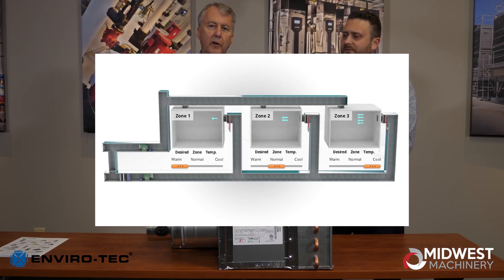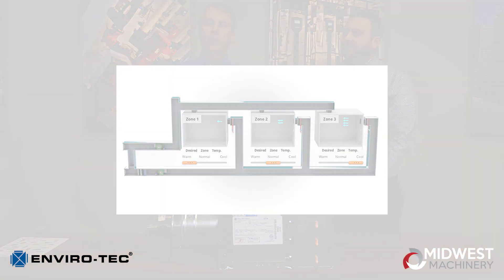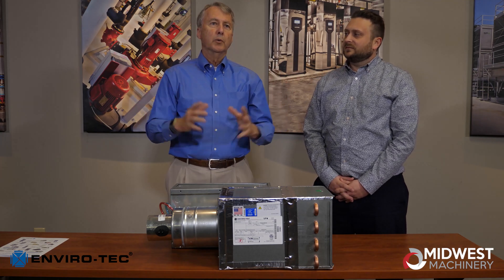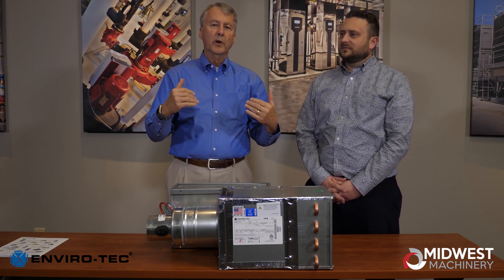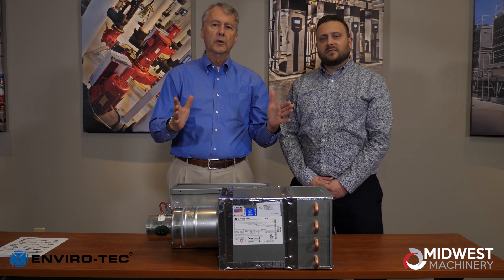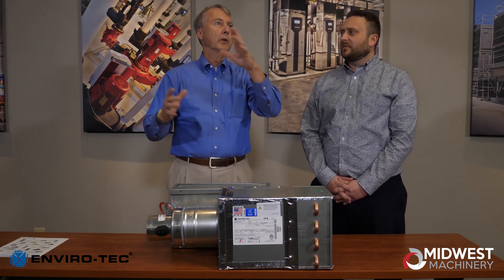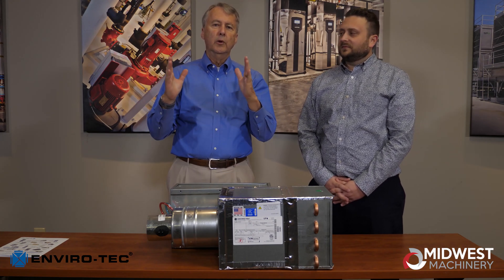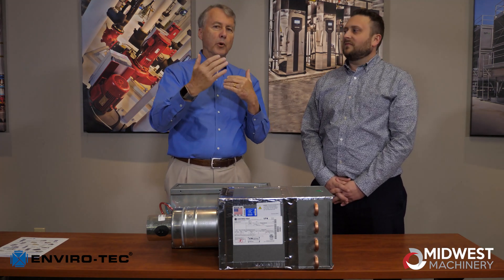We also have variable volume and constant volume products, both in the general height and low profile types, which go into larger facilities that might have chill beams around the outside. This is usually a scenario where you've got a building that is very tight and well insulated, and the chill beams along the outside take care of the immediate thermal load coming in from outside.